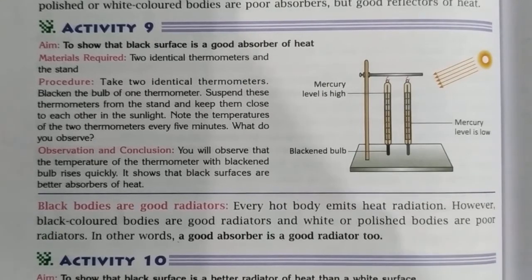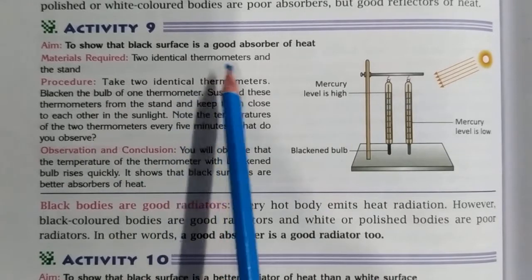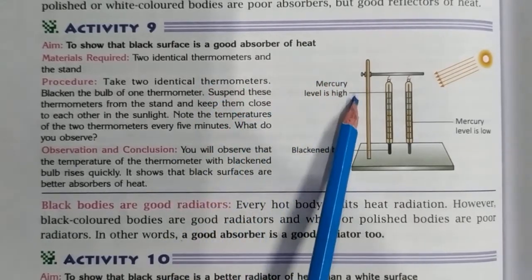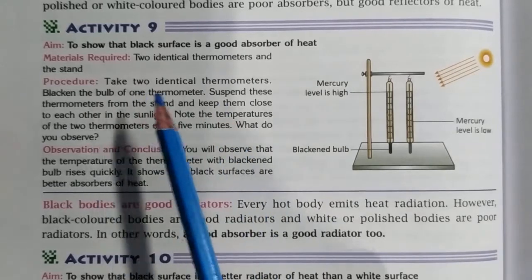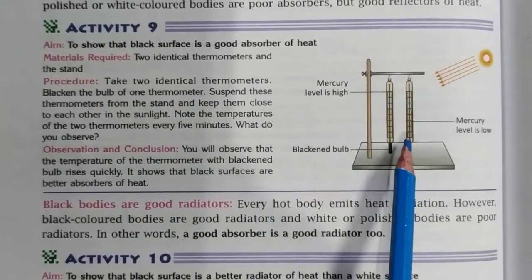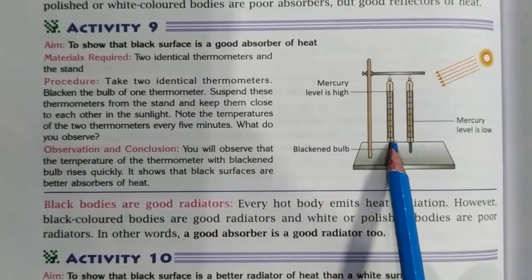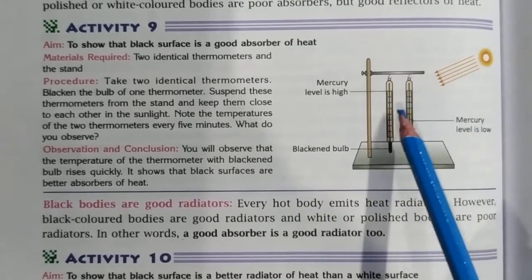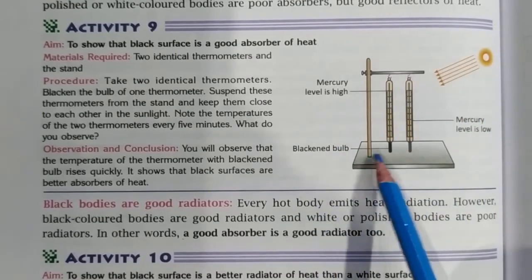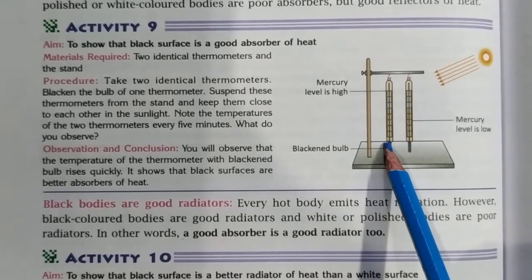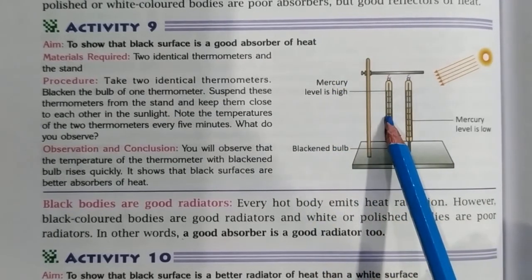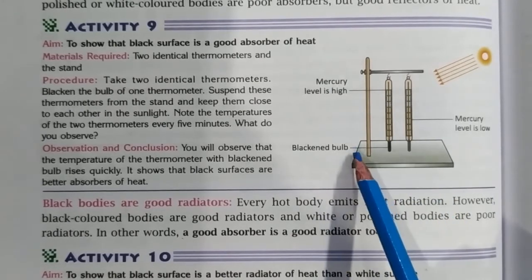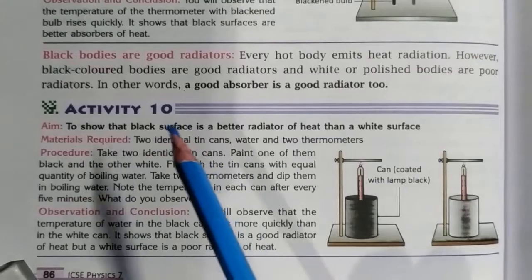Next we have Activity Number 9, to show that a black surface is a good absorber of heat. Here, two identical thermometers are taken, but the difference is that the bulb of one thermometer is blackened and the other is not blackened. When sunlight is incident on both thermometers, we observe that the blackened thermometer shows a higher temperature — the mercury level is higher — compared to the non-blackened one. This is an activity you can also perform at home.